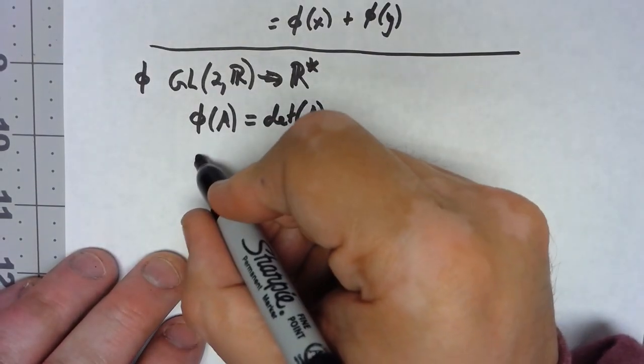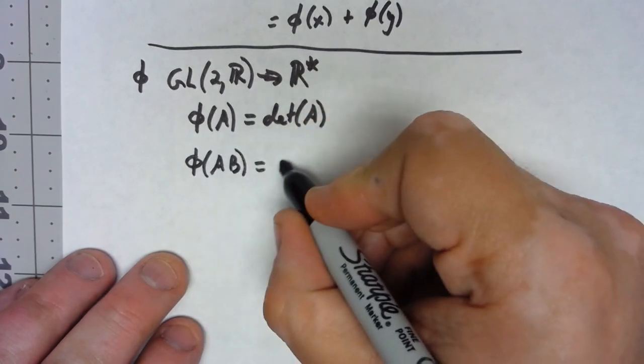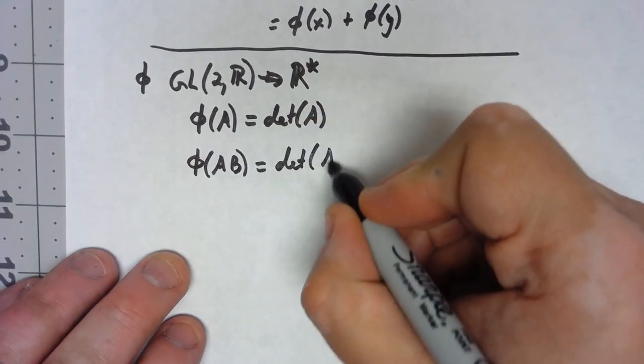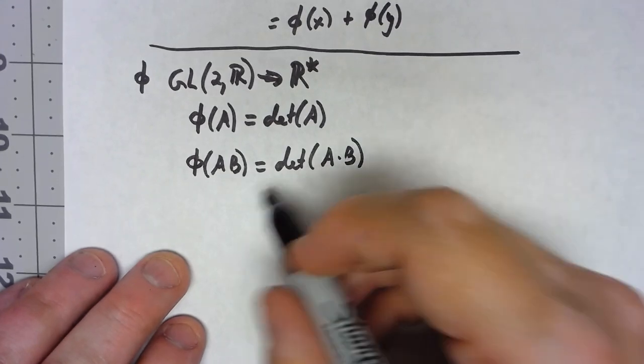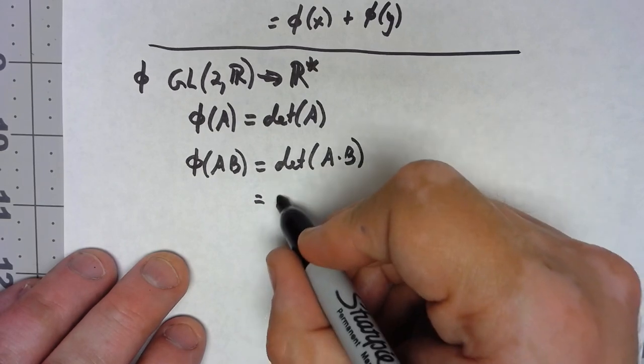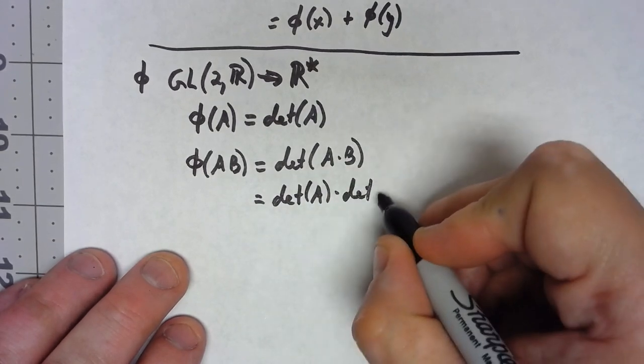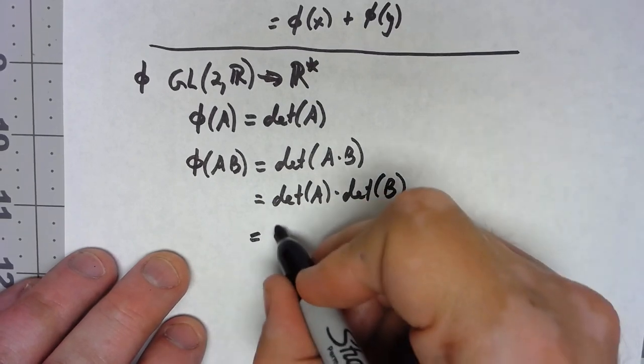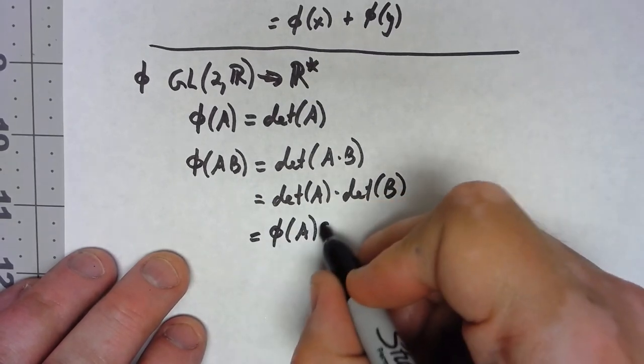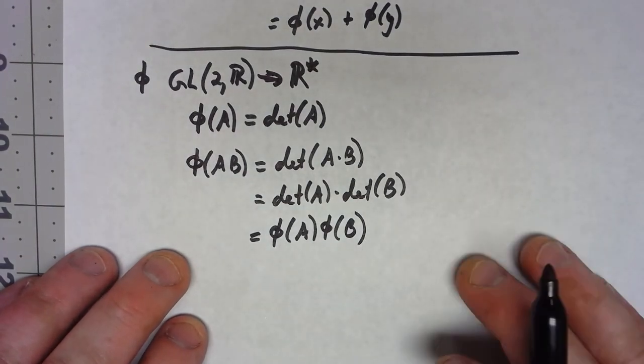To show that has the homomorphism property, phi of AB would be the determinant of A times B, but we know that the determinant of a product is the product of the determinants. So again, phi of A phi of B, and we have that homomorphism property.